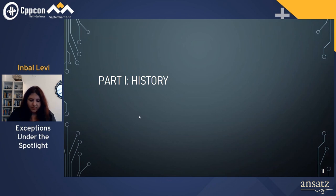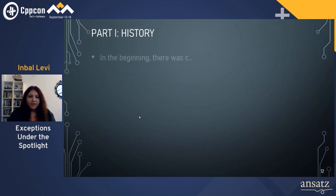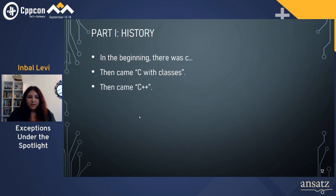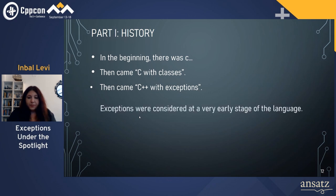Let's go back a few years. In the beginning there was C, then C with classes, then C++, and actually C++ with exceptions — because the exception mechanism was something considered very early at the beginning of C++. Error handling was a major concern, so let's look at the alternatives that existed before.